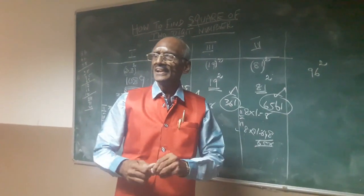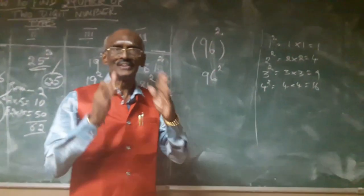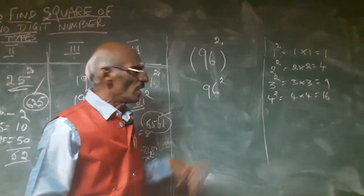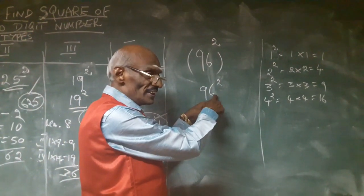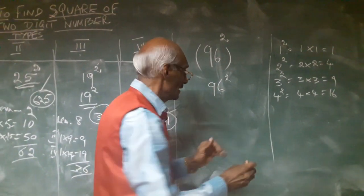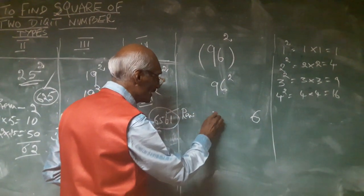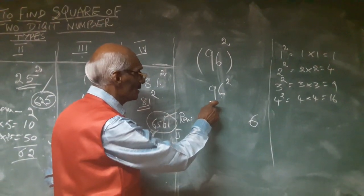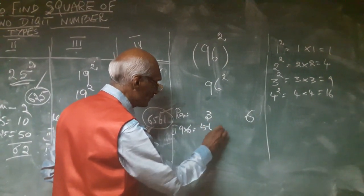Suppose the digit is a high value — to find the square of 96 squared. Step one: take the last digit, which is 6. Six into six equals 36. Write 6 separately; the remainder is 3. Step two: multiply the first digit by the second digit — 9 into 6 equals 54.